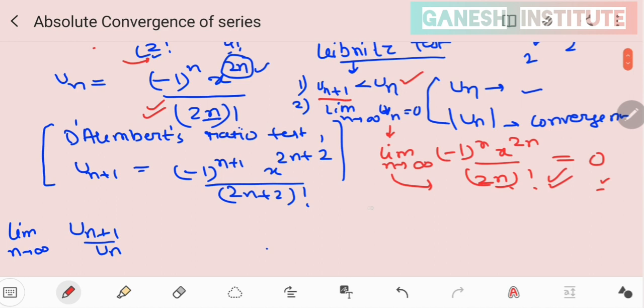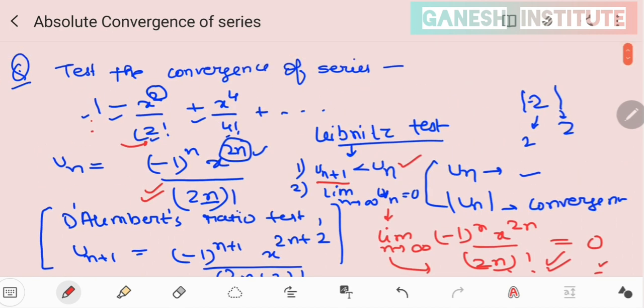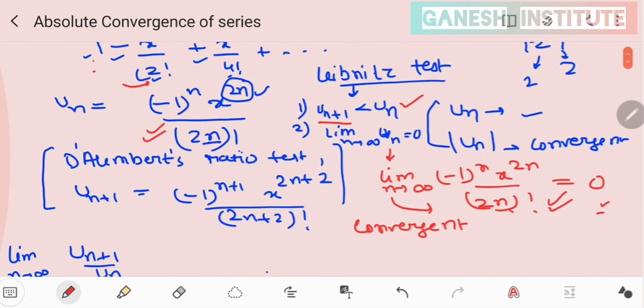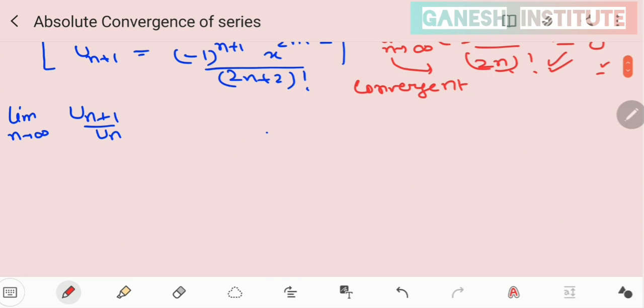That means, according to Leibniz's test, it is convergent. The series is convergent. Now, because we need to find out absolute convergence, test the absolute convergence for the series. In that case, what you need to do, you need to take the modulus. You need to find out the value, whether it is convergent or not for the absolute value.